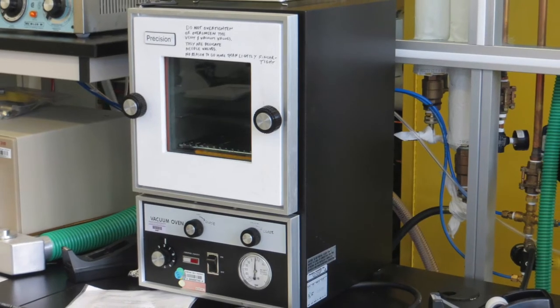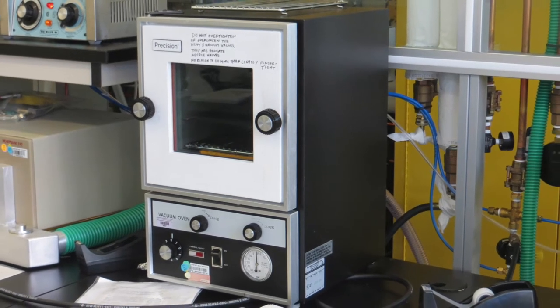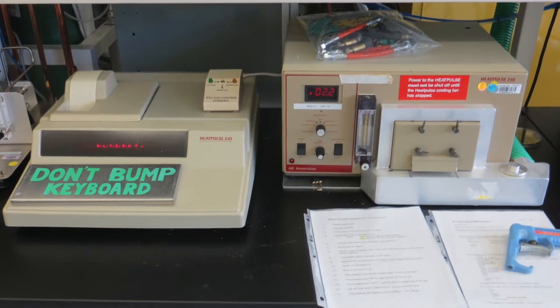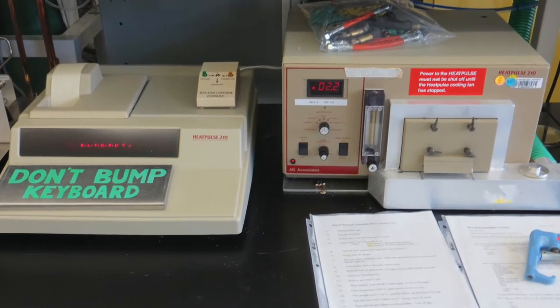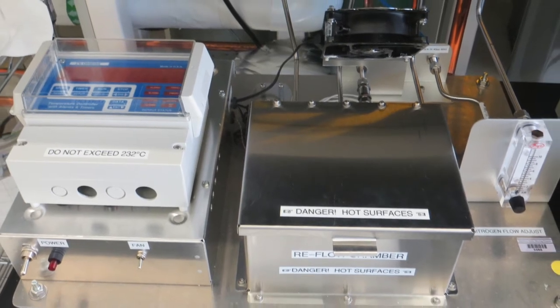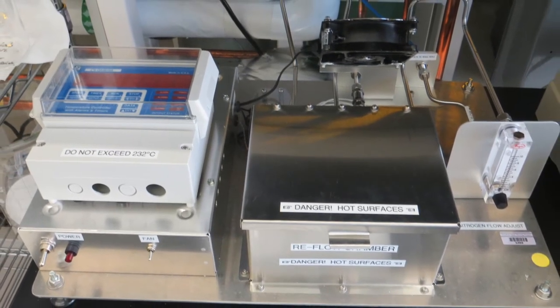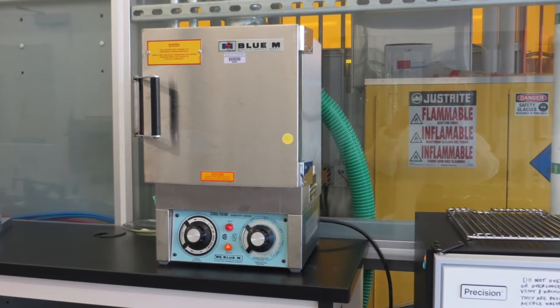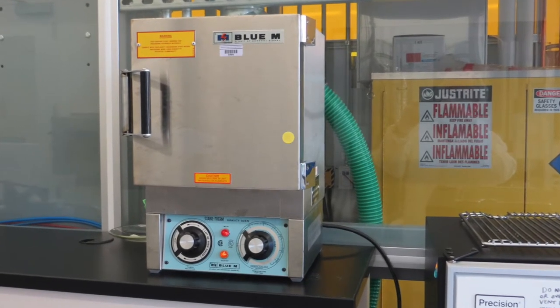Next to that is a vacuum oven which we mainly use for degassing epoxies and PDMS. This is the rapid thermal annealer used for annealing ohmic contacts. And this is the reflow chamber to solder stacked chips after flip chip bonding. We have many of these Blue-M convection ovens in various locations throughout the lab.